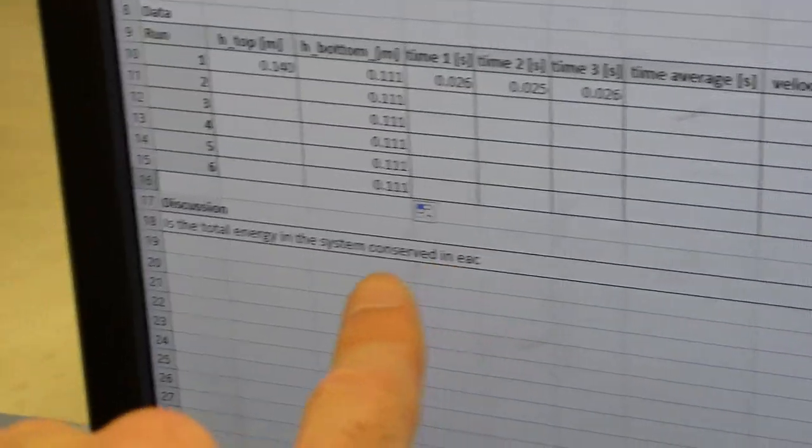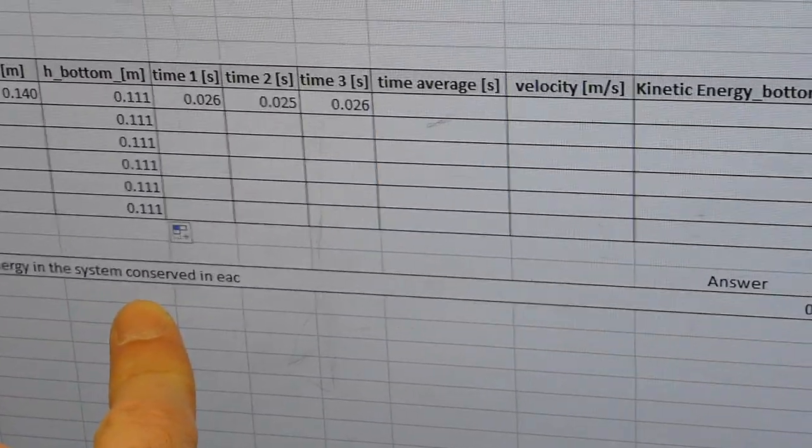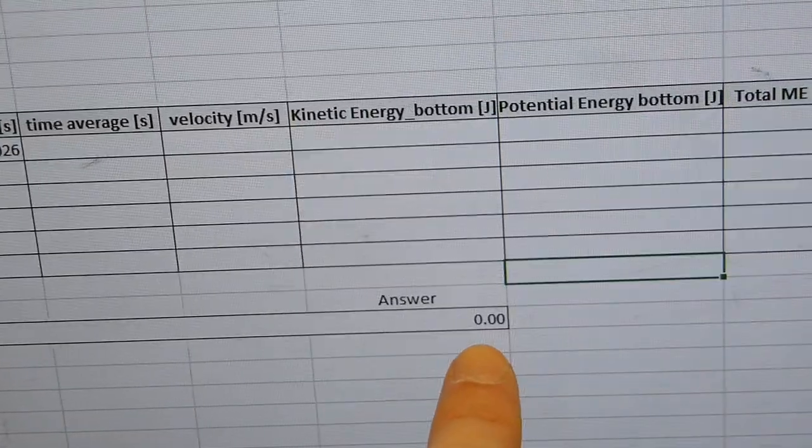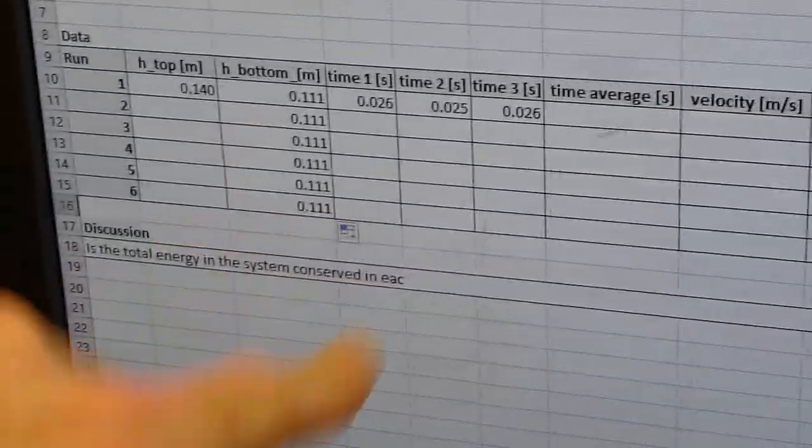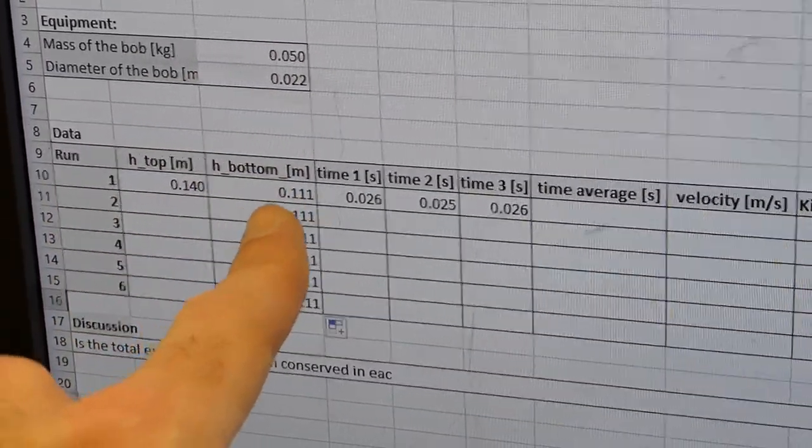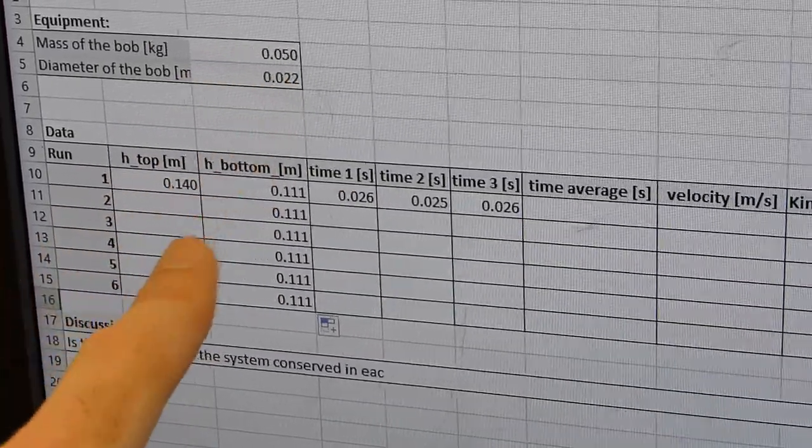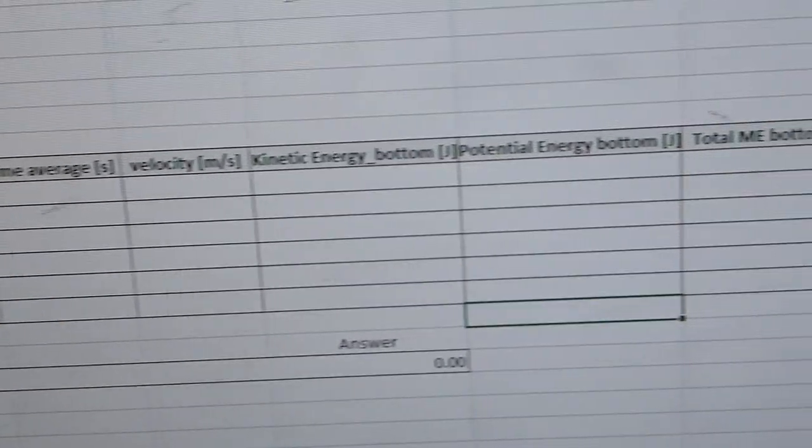The question that I want you to answer in the end in this lab is, is the energy conserved in the system in each of those runs? So you answer 1 for yes, 0 for no. And of course there are uncertainties here which we didn't look at. So consider if they are within the significant figures. I used some useful amount of significant figures. So see if within significant figures it's conserved.